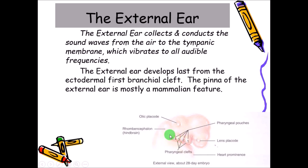The pharyngeal arches have pouches — first, second, third, fourth, and sixth — and between the pouches there are clefts. The first pharyngeal cleft, or branchial cleft, between the first and second pharyngeal pouches gives rise to the external ear. The pinna of the external ear is mostly a mammalian feature, more commonly seen in mammalian animals.